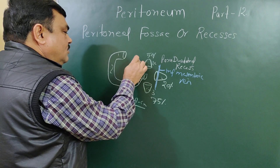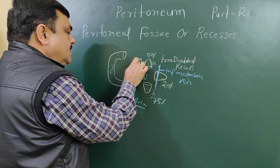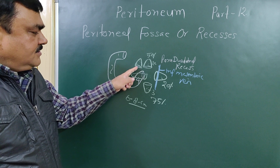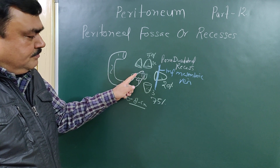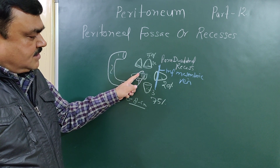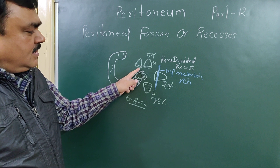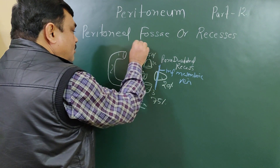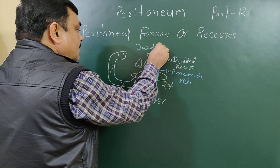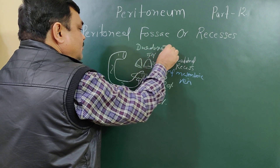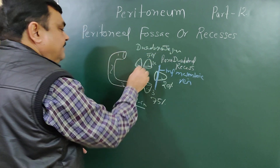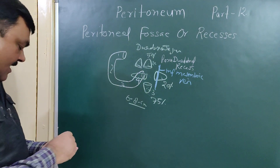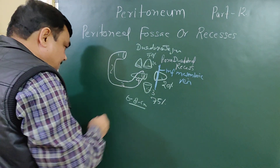The duodenojejunal recess is about three centimeters in length and is present at the junction of the duodenum and jejunum — that's why it is known as the duodenojejunal recess. Its direction is downward and to the right side.